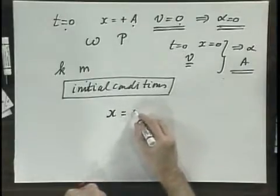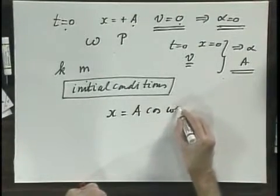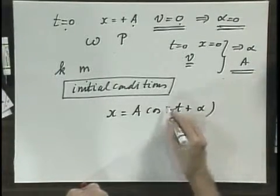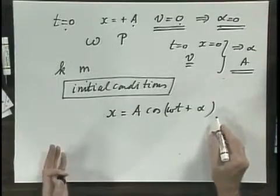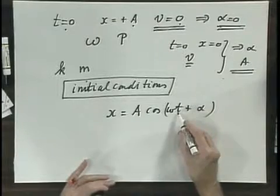Now, in our simple harmonic oscillation, which has the form x equals A cosine omega t plus alpha in its most general form, notice that this oscillation will go on forever and ever and ever.